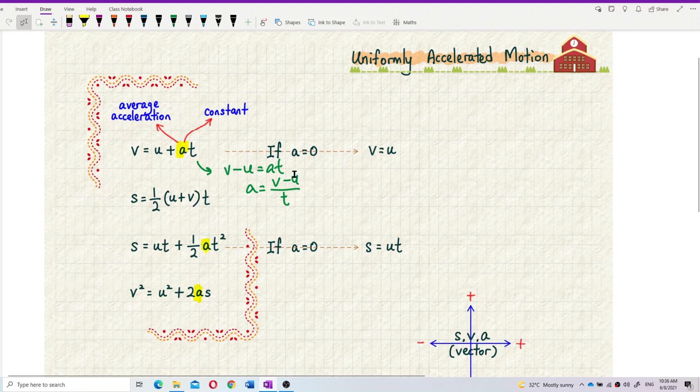This is not instantaneous acceleration, this is average acceleration. Because you use a change of velocity, which is final velocity minus initial velocity, divided by the total time taken. So this is the average acceleration. And the acceleration here must be constant.